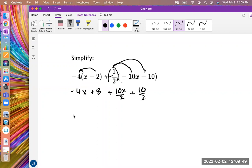And so this will simplify to negative 4x plus 8 plus 5, the 10 divided by 2 is 5, and then plus 5x and plus 5. And then I combine like terms here, so it's negative 4 plus positive 5 is positive 1x plus 13. So it's x plus 13. And there we go. There's our final answer here.